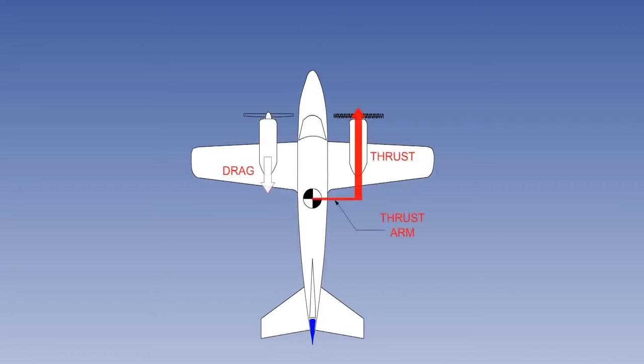The yawing moment is the product of thrust from the operating engine, multiplied by the distance between the thrust line and the centre of gravity, the thrust arm, plus any drag from the failed engine, multiplied by the distance between the engine centre line and the CG.